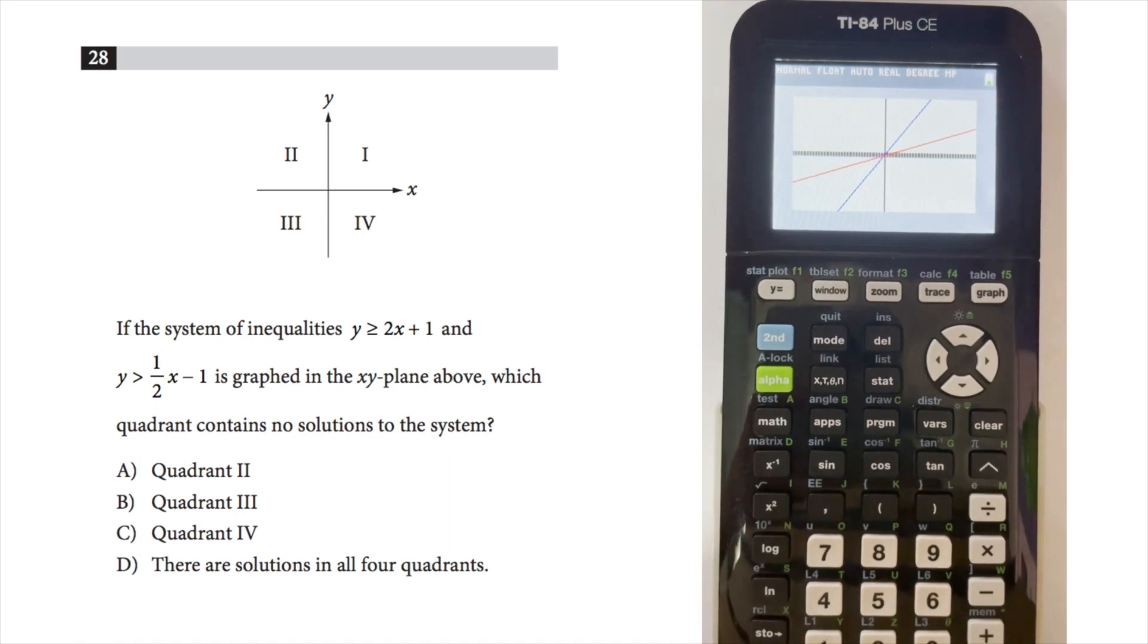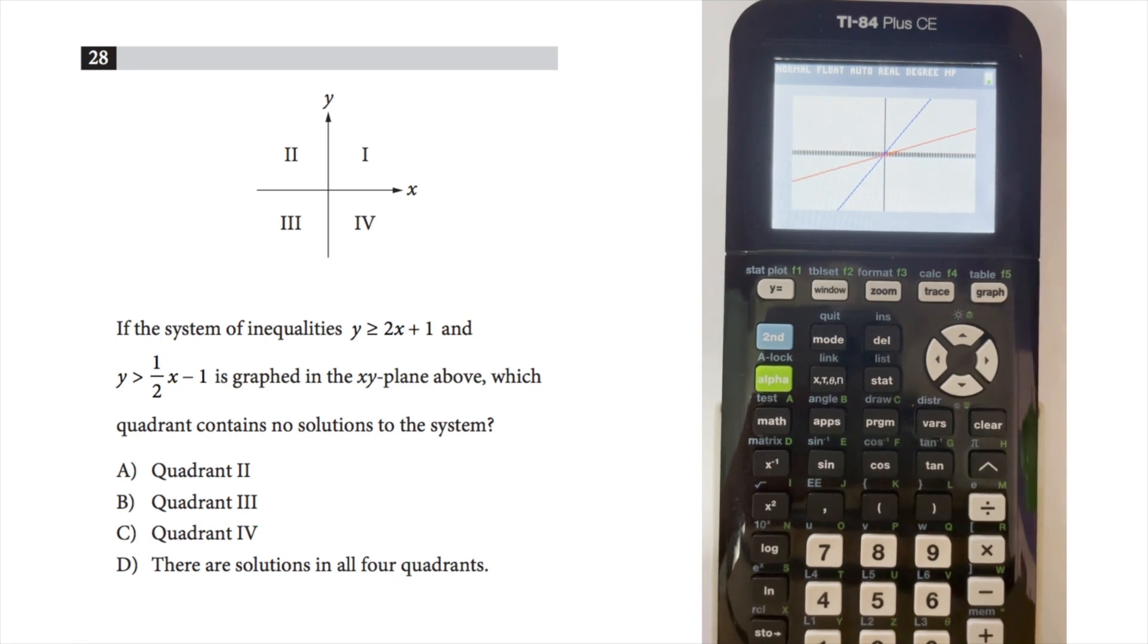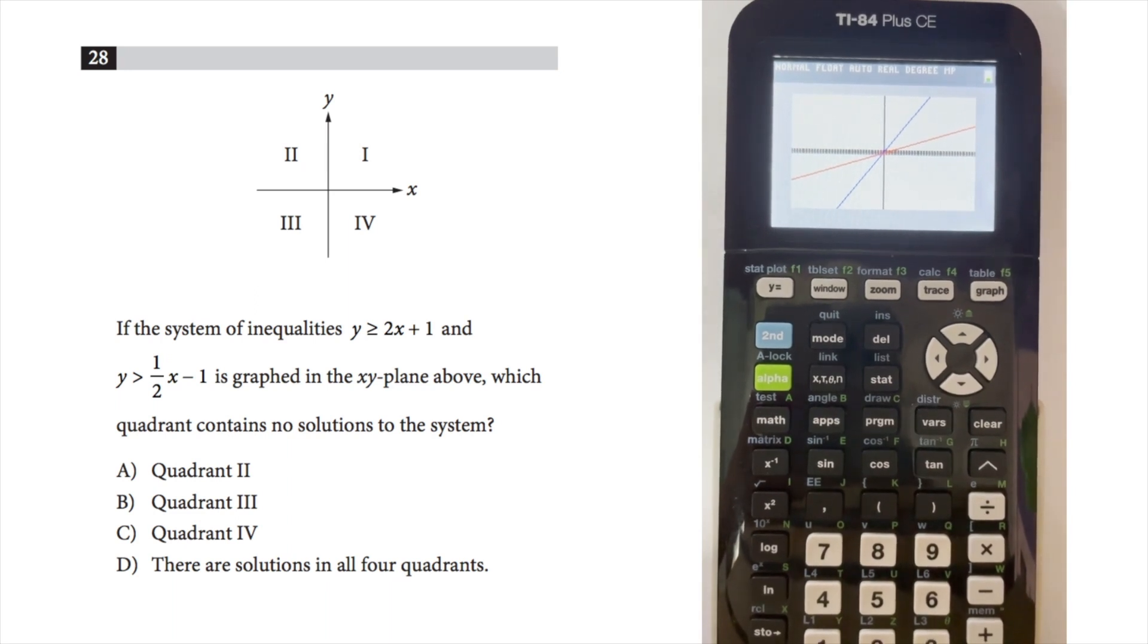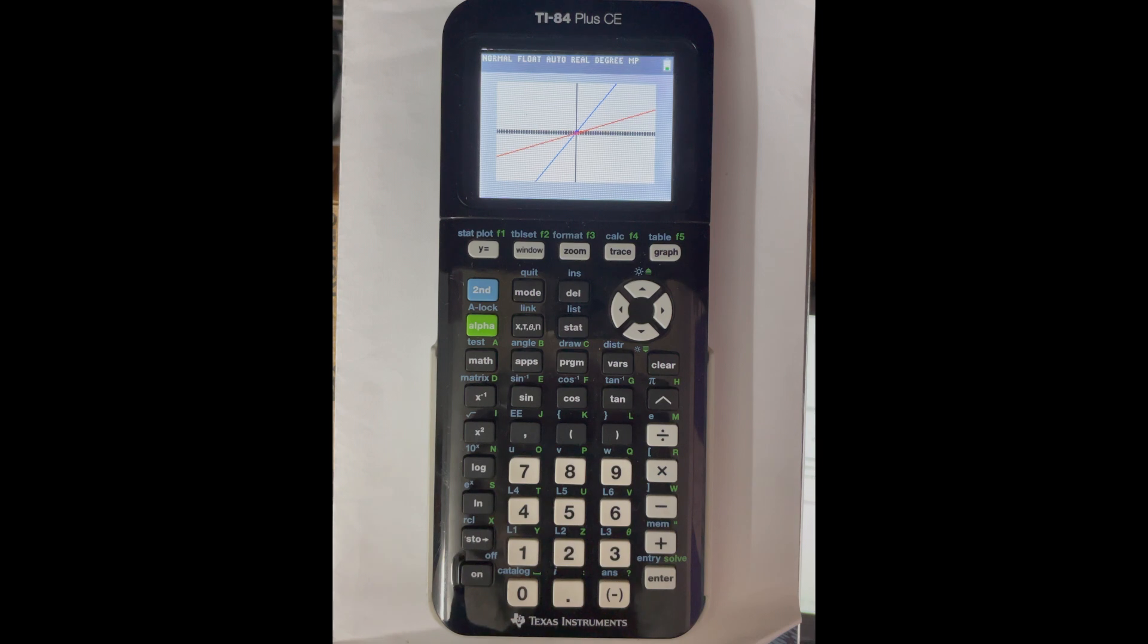Since the inequality sign in the question is greater than, this means that the solution should be above both the red and the blue line. Just by looking at the screen, I can see that quadrant 4 has no solutions to these equations. Therefore, I immediately choose option C as the right answer. A graphing calculator like this can help you get a lot of the questions right quickly and save time. So if you can, I would recommend that you get a good quality graphing calculator and make sure that you've practiced using it well.